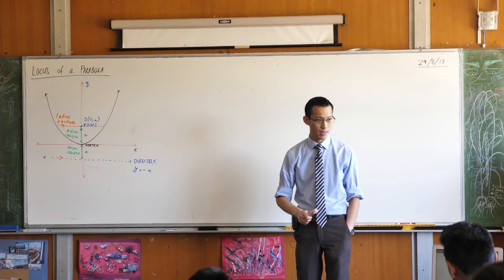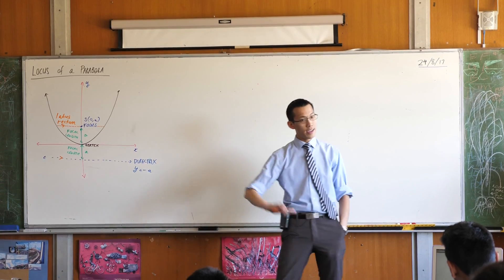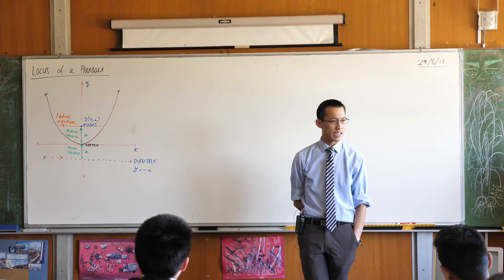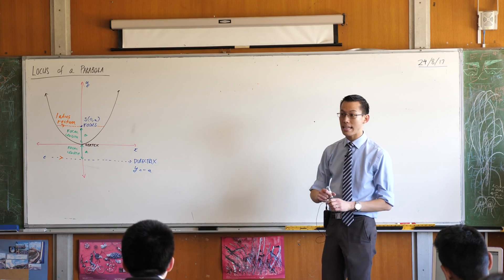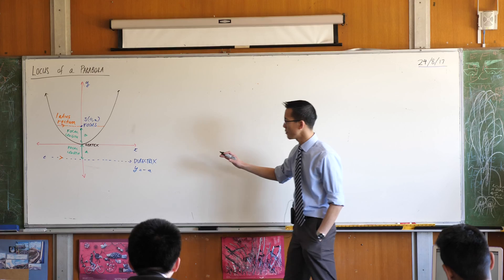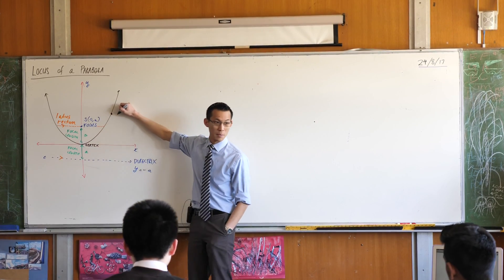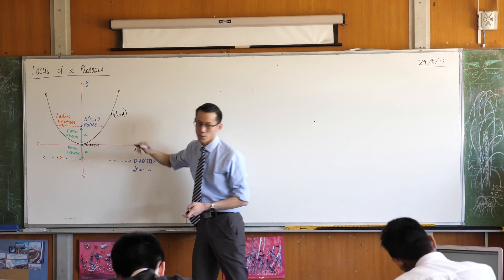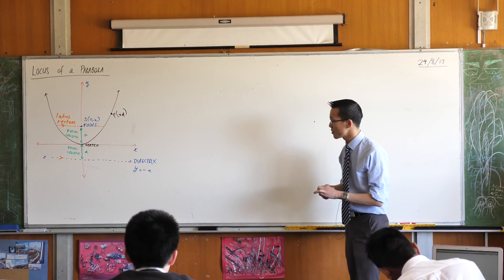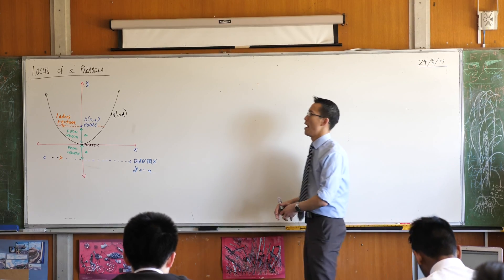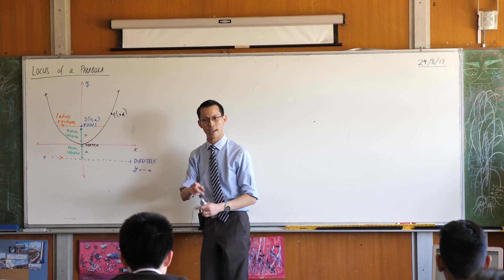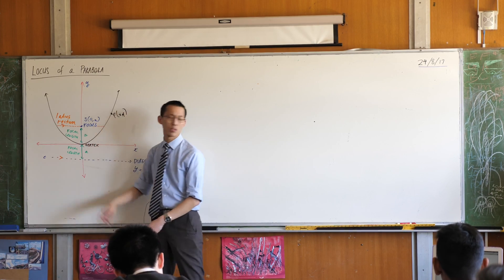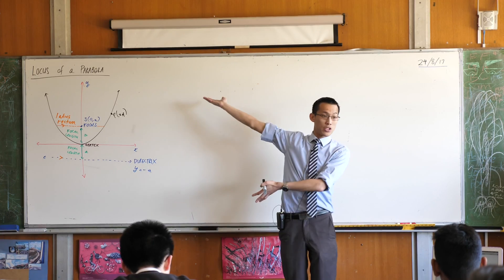Now I will let you work out why the latus rectum is important to this — in particular, I want you to have a think about its length. We'll come back to that in a minute. Here are all the important features, and on this basis we can work out the equation of this parabola. It looks kind of like y equals x squared, sort of, but let's find out what it actually is. I'm going to say there's some point P with coordinates (x, y) because it can move along this parabola. The set of all points that P can occupy is called the locus of this parabola — so when you're asked for the equation of the locus, they mean the equation of the parabola.